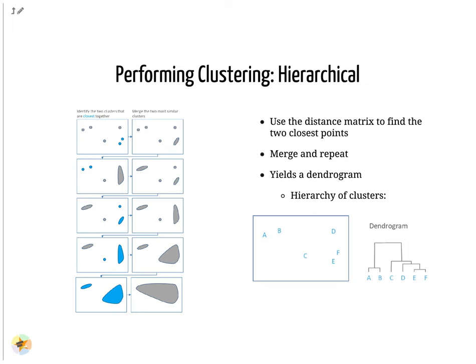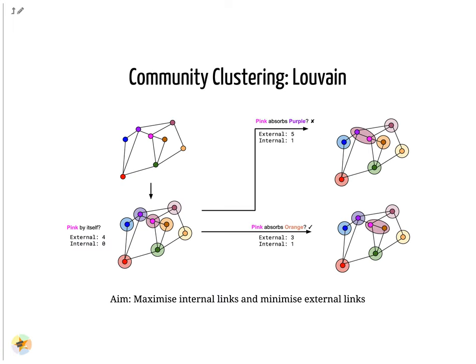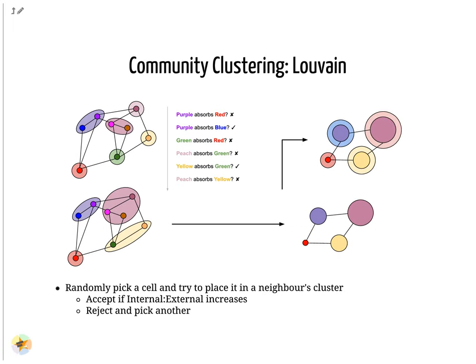Louvain clustering is a widely used type of community clustering for single-cell data. Here each cell is assigned a neighborhood of its own and the number of internal and external links between neighborhoods are counted. For each iteration, a random cell is selected and brought within the neighborhood of another cell, and the internal and external links are once again counted. If the new configuration has reduced the number of external links in favor of more internal links, then the configuration is kept. If the new configuration has instead increased the number of external links, then the configuration is rejected and another cell is picked and tested. By performing this multiple times, a community structure of cells is built to whichever degree of specificity the user desires.